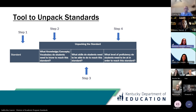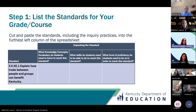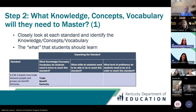The first step is to take your standard - which Lauren has already done a great job digging into - and that's going to go on the left-hand side. Then next is: what knowledge, concepts, and vocabulary do students need to know to reach the standard? Just like Lauren already showed, you look at what kids need to know based on what the standard is telling you. So they need to know about trade, about benefits and what that means, and of course about Kentucky as well.